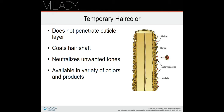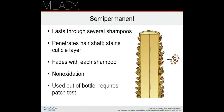Semi-permanent lasts through several shampoos — if they don't shampoo a lot, it could last about a month. It penetrates the hair shaft and stains it slightly — it doesn't go into the medulla or cortex, just stains the cuticle layer. It fades with each shampoo, is non-oxidizing, used straight from the bottle, and does require a patch test to make sure the client isn't allergic.